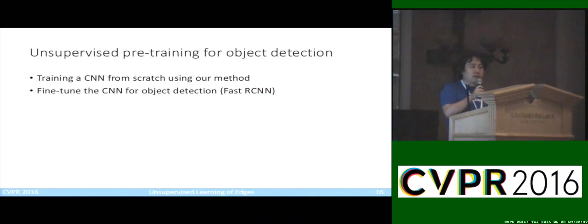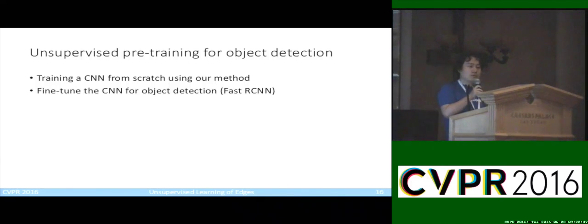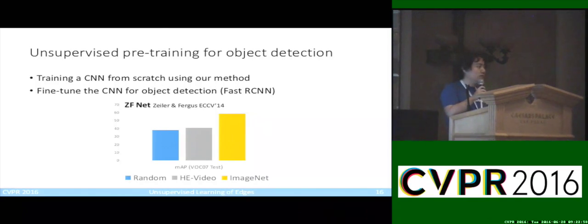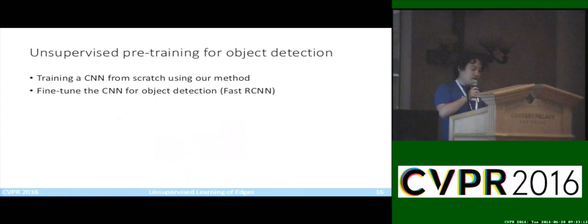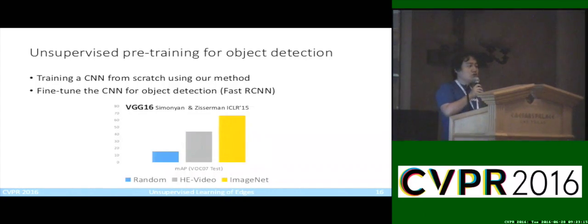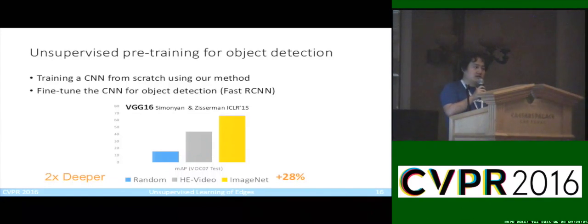Is this unsupervised pre-training scheme effective? We test this by transferring the learned representations to object detection tasks. We train the edge CNN from scratch using videos, take the CNN weights, and fine-tune on the Pascal VOC07 dataset using R-CNN. Using a seven-layer network, our unsupervised pre-training is only slightly better — about 3 percent — over random initialization. However, switching to the deeper VGG 16-layer network, our method performs 28 percent better than random initialization. These results show that our unsupervised pipeline not only provides a high-quality edge detector but also a promising method for learning features as the network grows deeper.